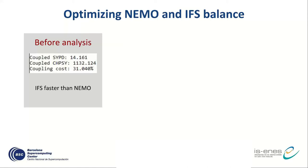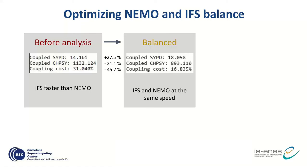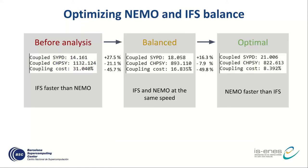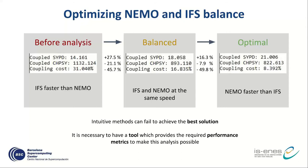In summary, the technically balanced configuration shows improvement — about a 16% improvement in execution — and also improves efficiency in terms of core hours. Intuitive methods can fail to achieve the best solution, so we propose that it is necessary to have a tool with more performance metrics to do this analysis properly.